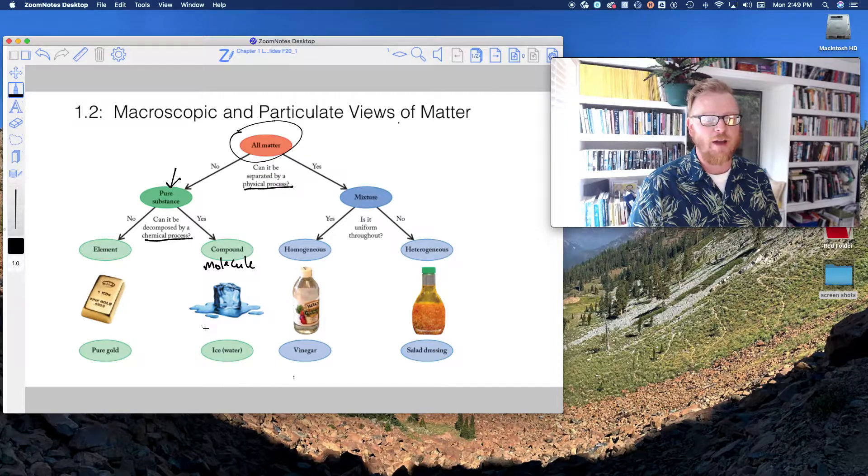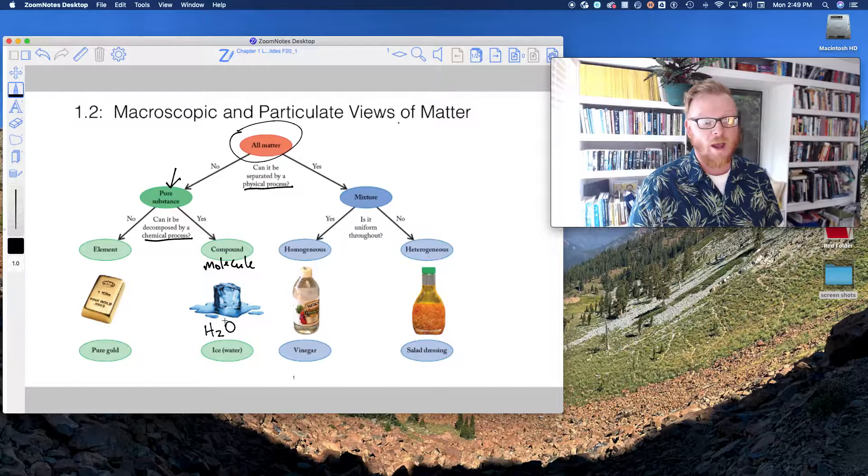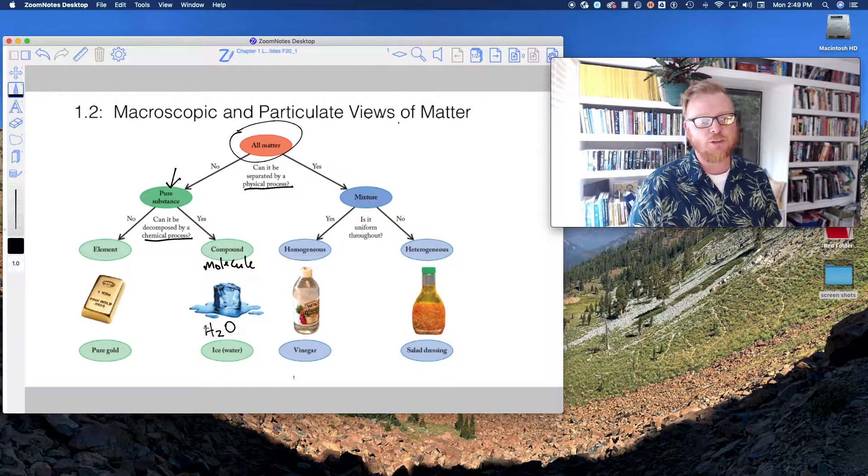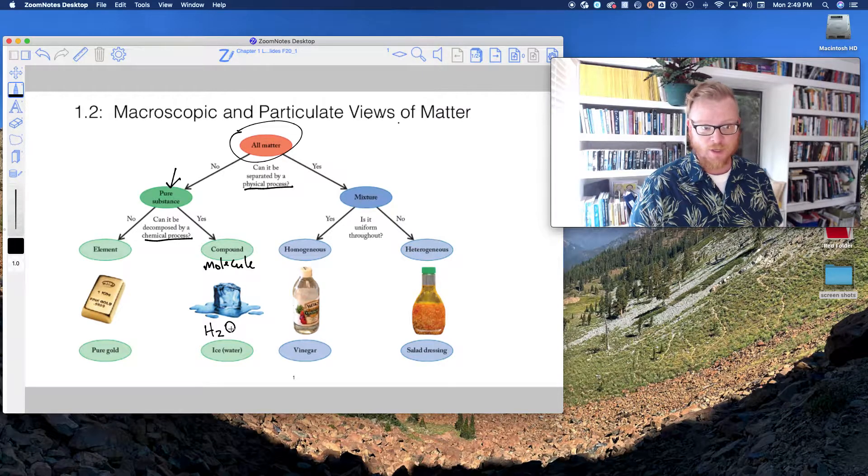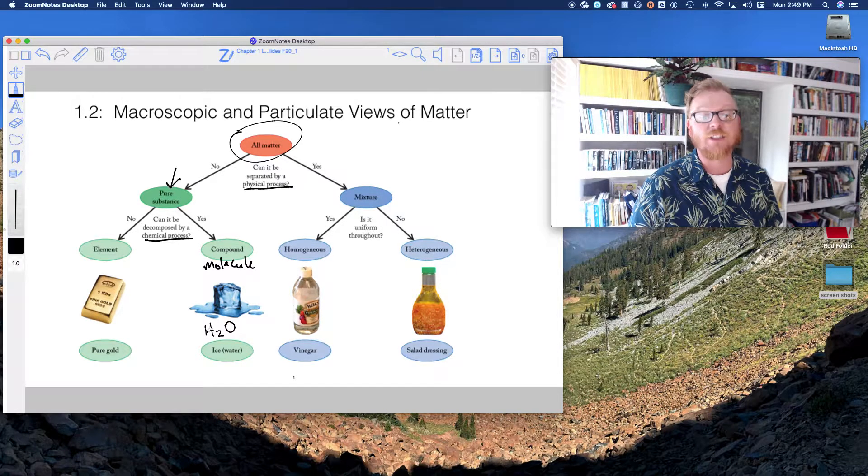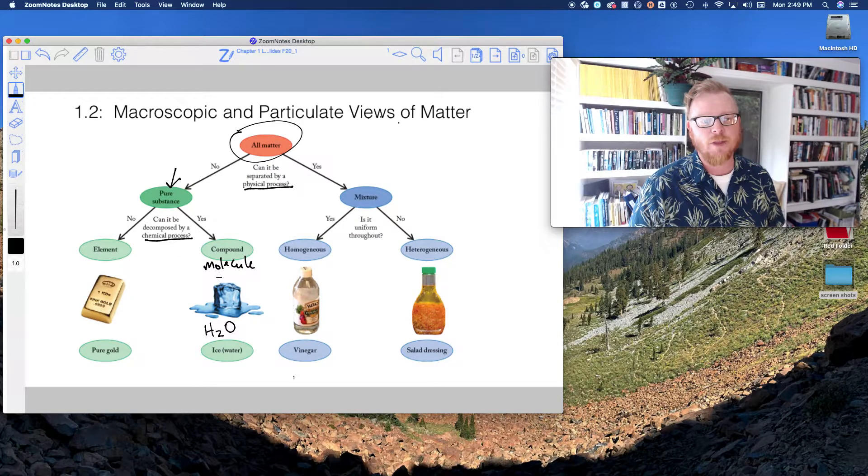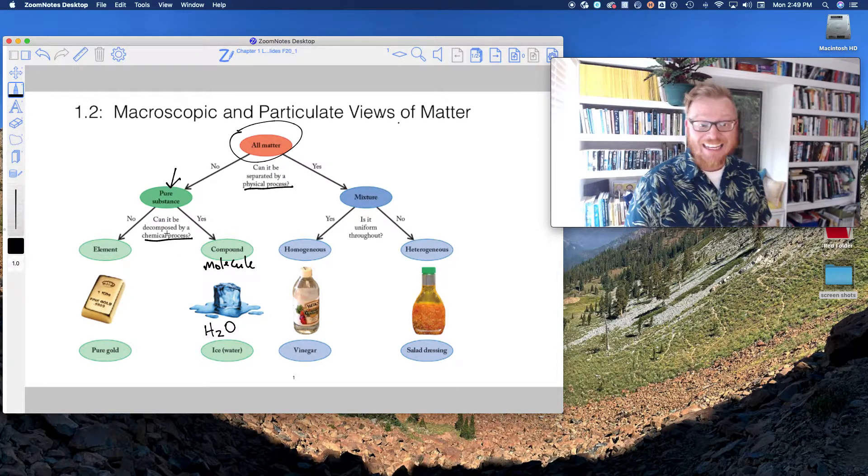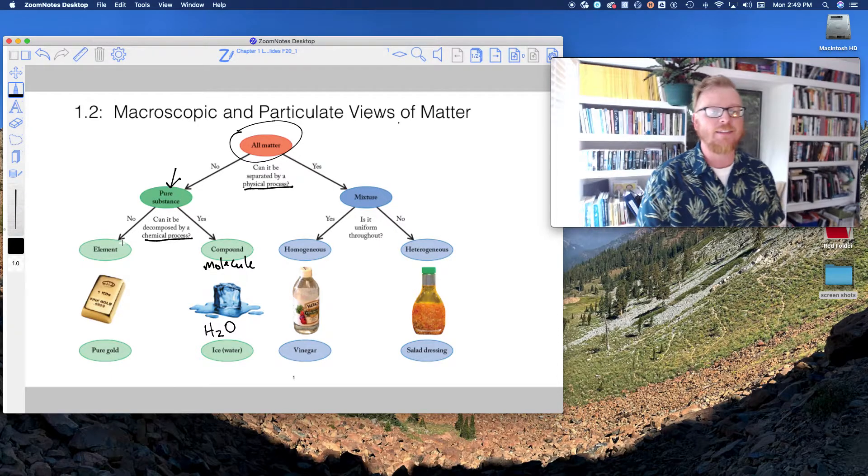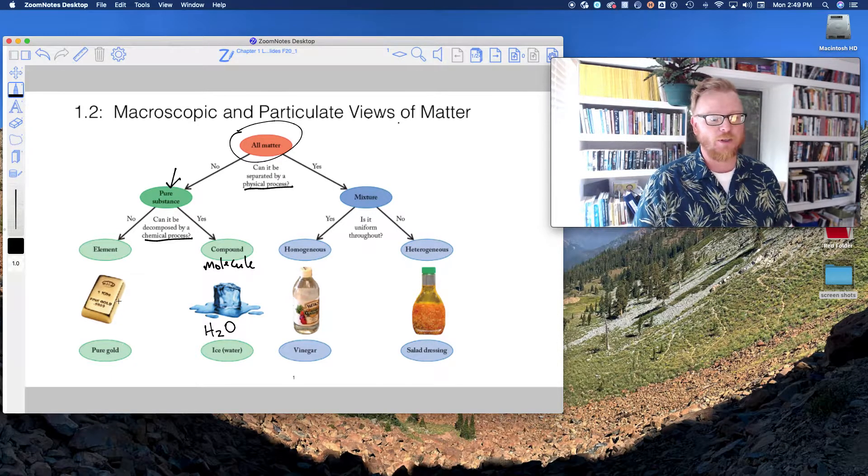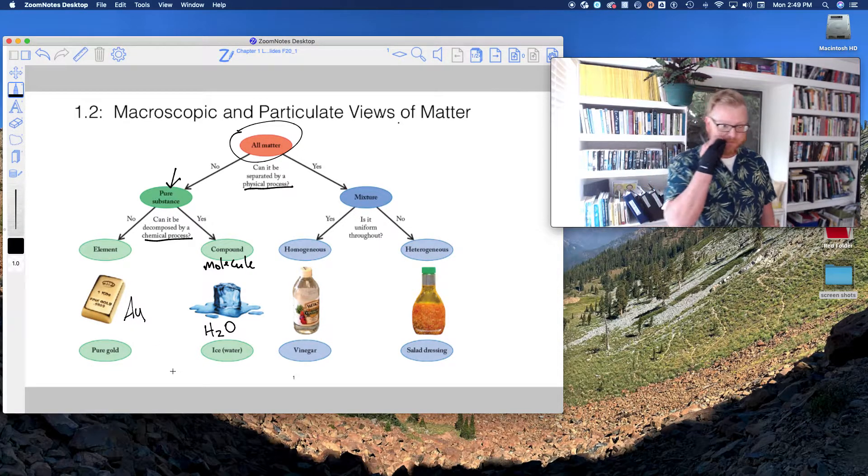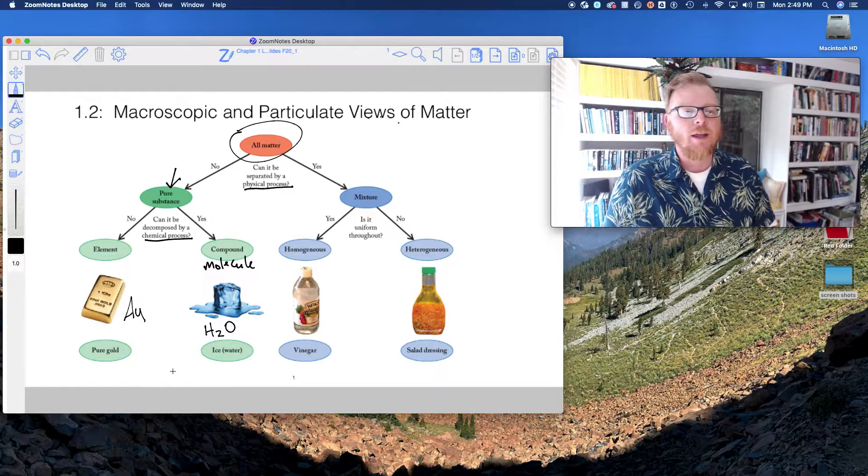So a molecule would be another name for a compound, and so here is this nice picture of ice. We know ice is H2O, it's the solid form of two hydrogens bonded to one oxygen. That chemical process could separate the hydrogen and the oxygen, so that's what makes it a compound or a molecule. And if we can't separate it by a chemical process, then it is an element. For example, pure gold here, chemical symbol Au.